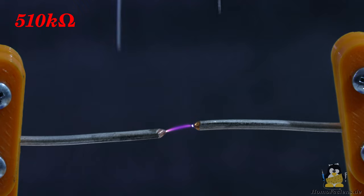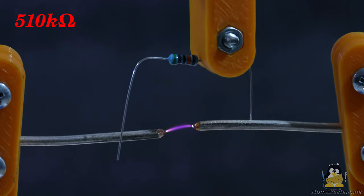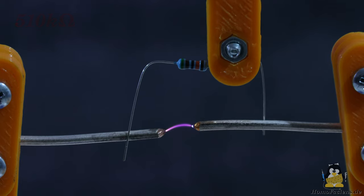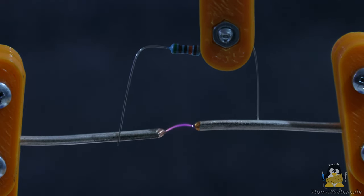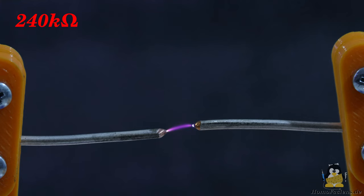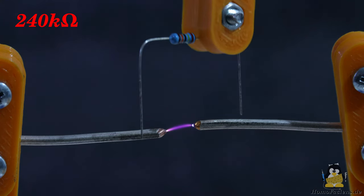Even with the 500 kiloohm resistor in parallel, the plasma arc is maintained. However, the 240 kiloohms resistor interrupts the plasma and emits magical blue smoke. The resistance of the 5mm long plasma arc must therefore be in the range of 200 kiloohms.